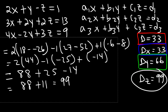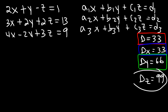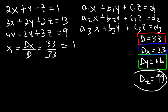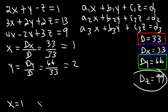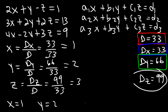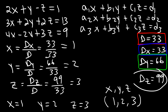Now we have everything we need to finish the problem. x is equal to dx over d, which is 33 divided by 33, so x equals 1. y is dy over d, which is 66 divided by 33, so y equals 2. And z is dz over d, which is 99 divided by 33, so z equals 3. The solution is x=1, y=2, z=3. And that's it — now you know how to use Cramer's rule to solve a system of equations with 3 variables.